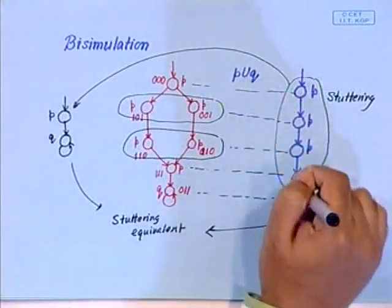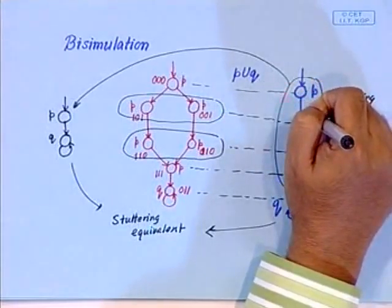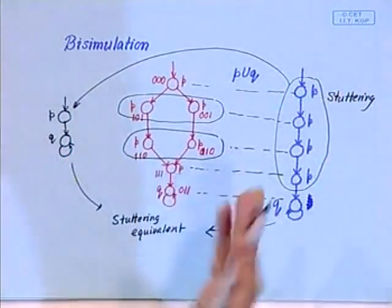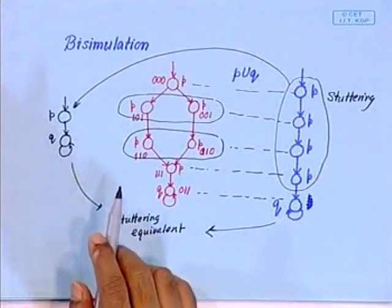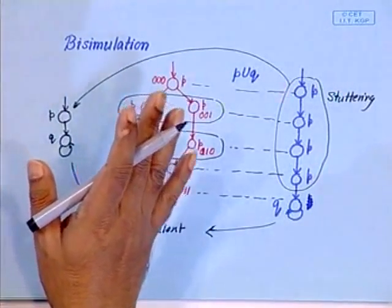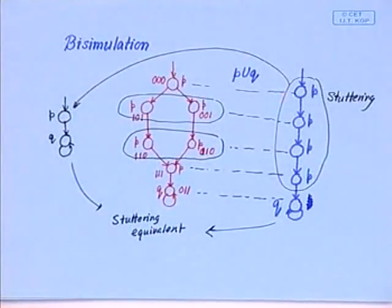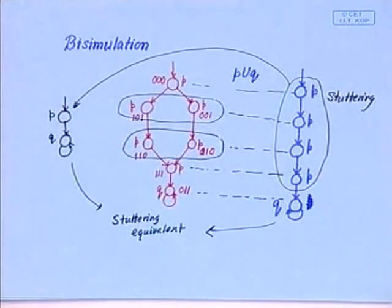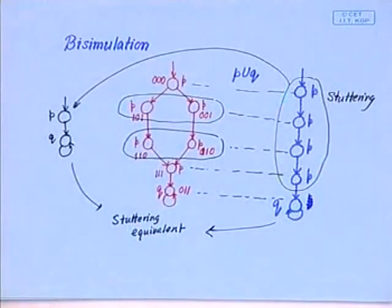So if you remove the x operator, then CTL is preserved by stuttering equivalence. Now, why are we talking about these equivalence relations? Because our goal is to check the property on a minimized or reduced state machine. Given the property that you want to prove, you can choose the set of variables that belong to that property and try to do a bisimulation minimization based on that. You can also try to do a stuttering equivalent reduction if you are proving CTL properties without the x operator, which reduces the number of states even further.